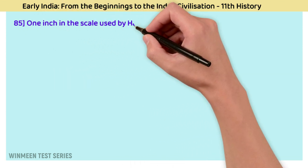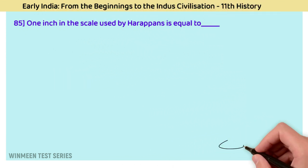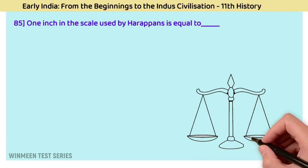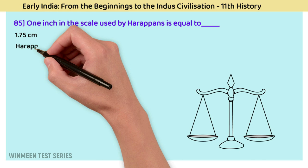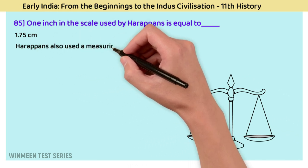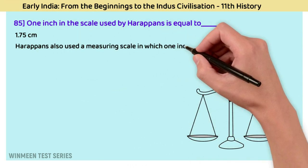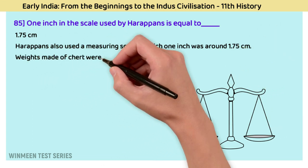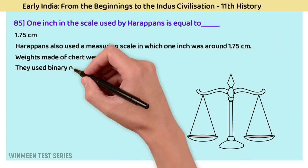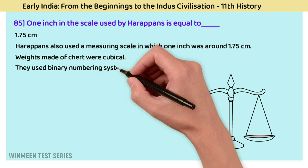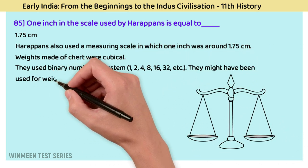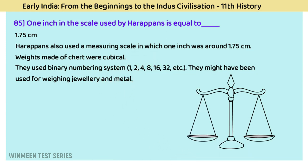Question 85: One inch in the scale used by Harappans is equal to? The answer is 1.75 cm. Harappans used a measuring scale in which 1 inch was around 1.75 cm. Weights made of chert were cubical, and they used a binary numbering system of 1, 2, 4, 8, etc. These might have been used for weighing jewellery and metal.